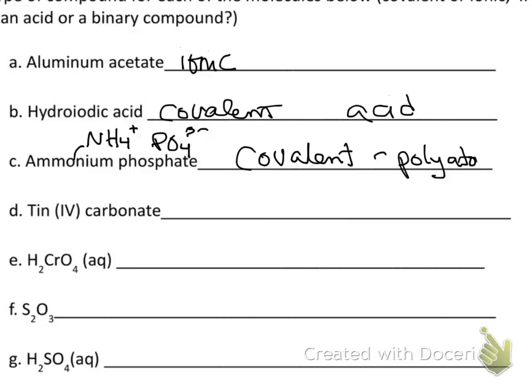Ammonium phosphate is covalent because there's no metal, but it's a covalent polyatomic compound, which wasn't really a choice in the problem. It's definitely not an acid because there's no H at the front — the H's on the ammonium are part of that group, not an acid indicator.